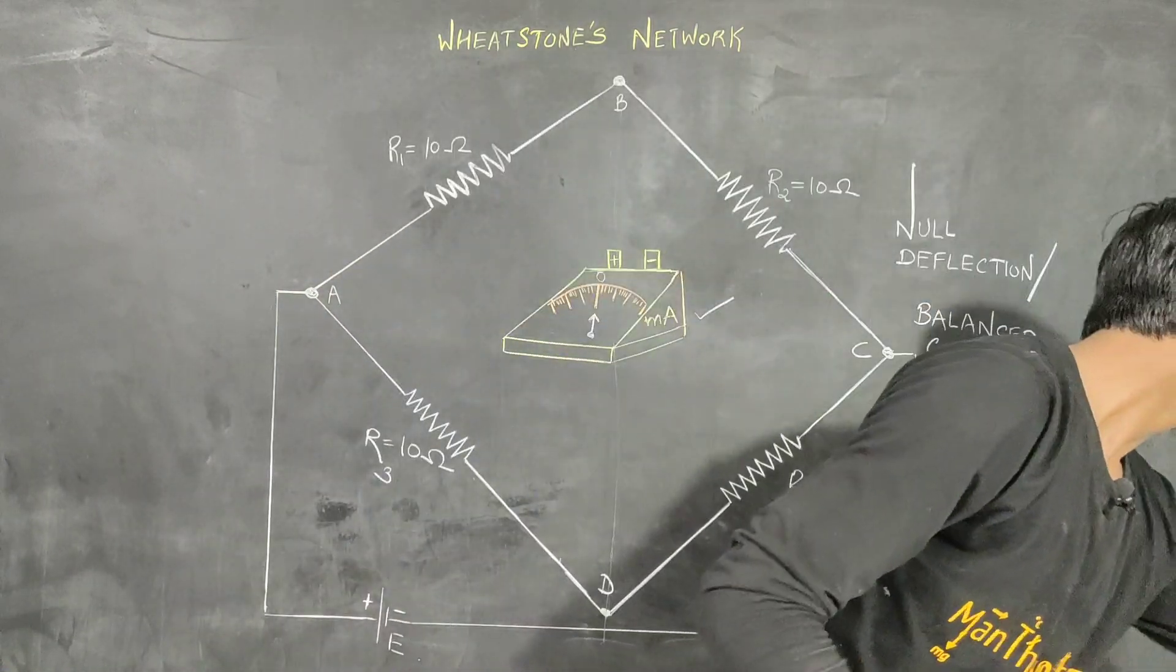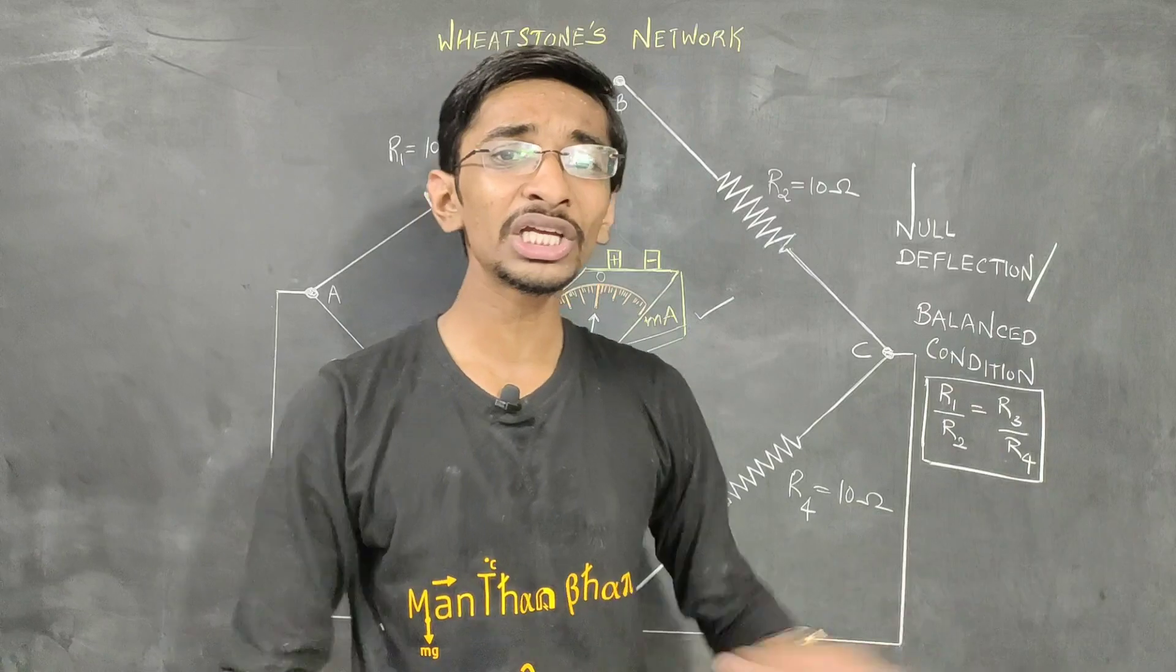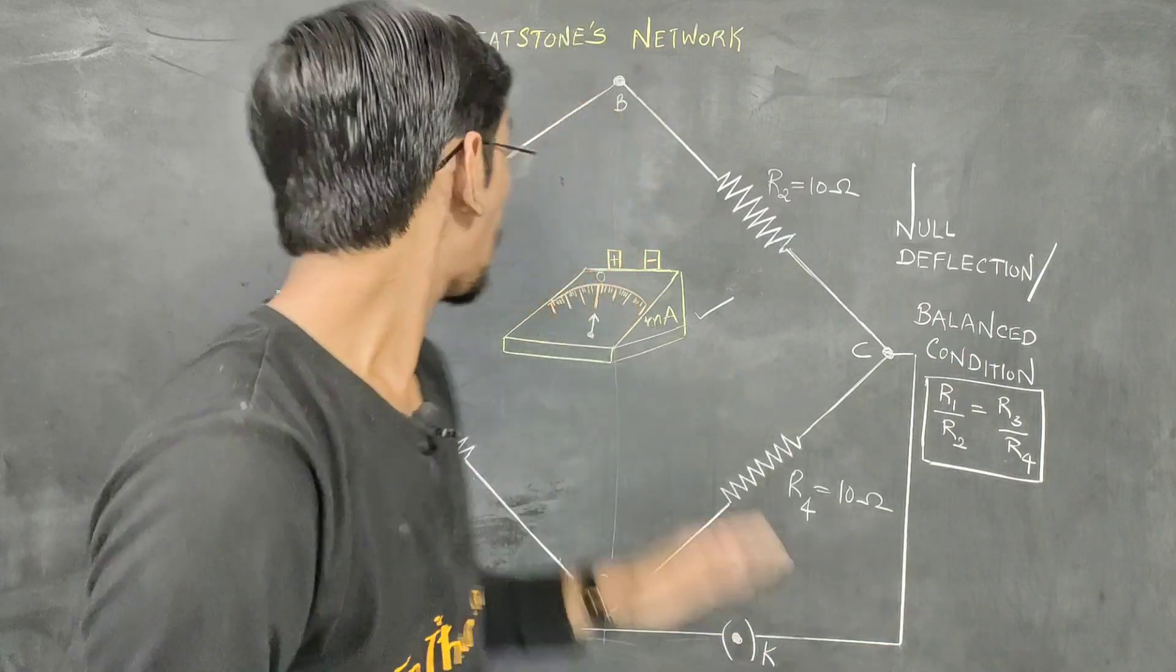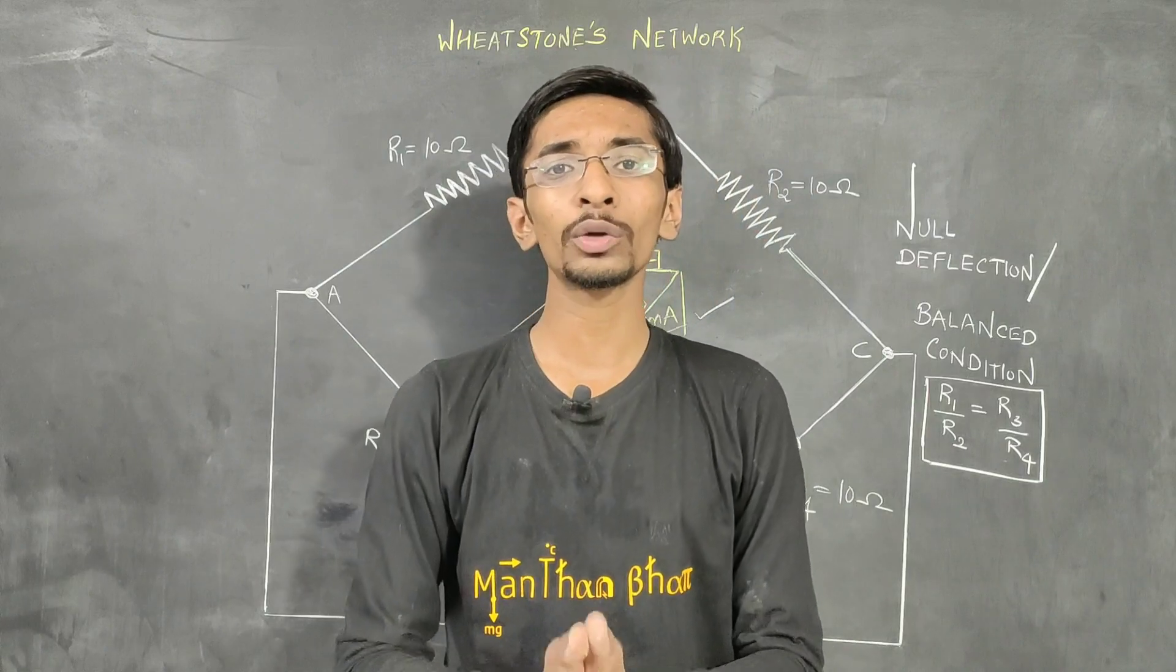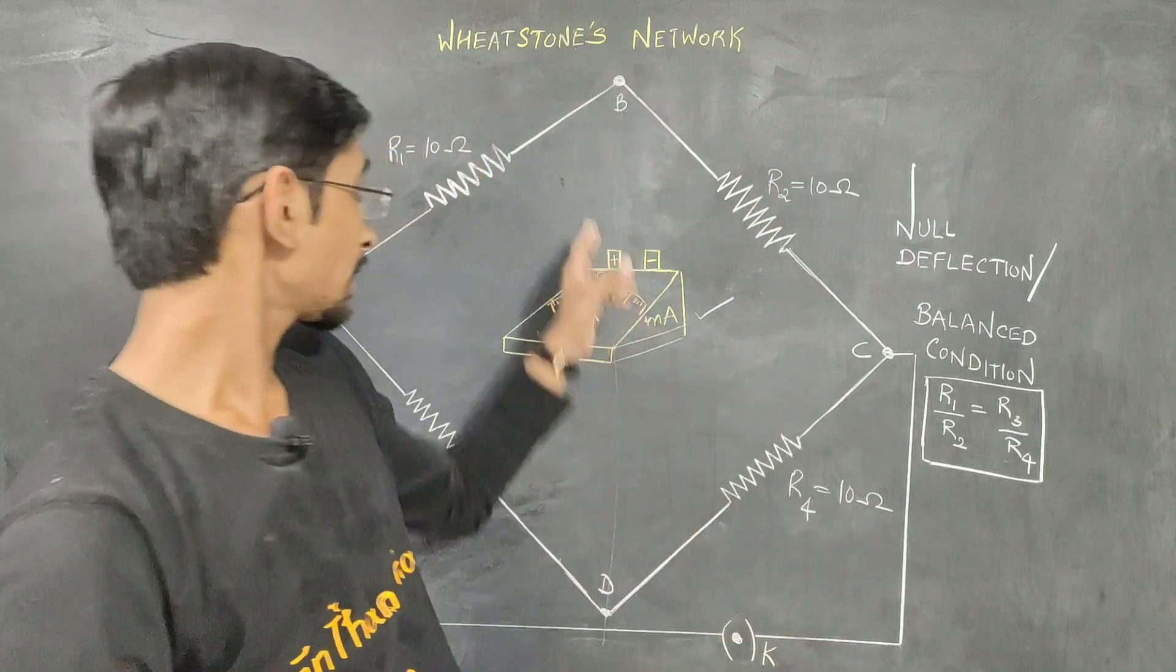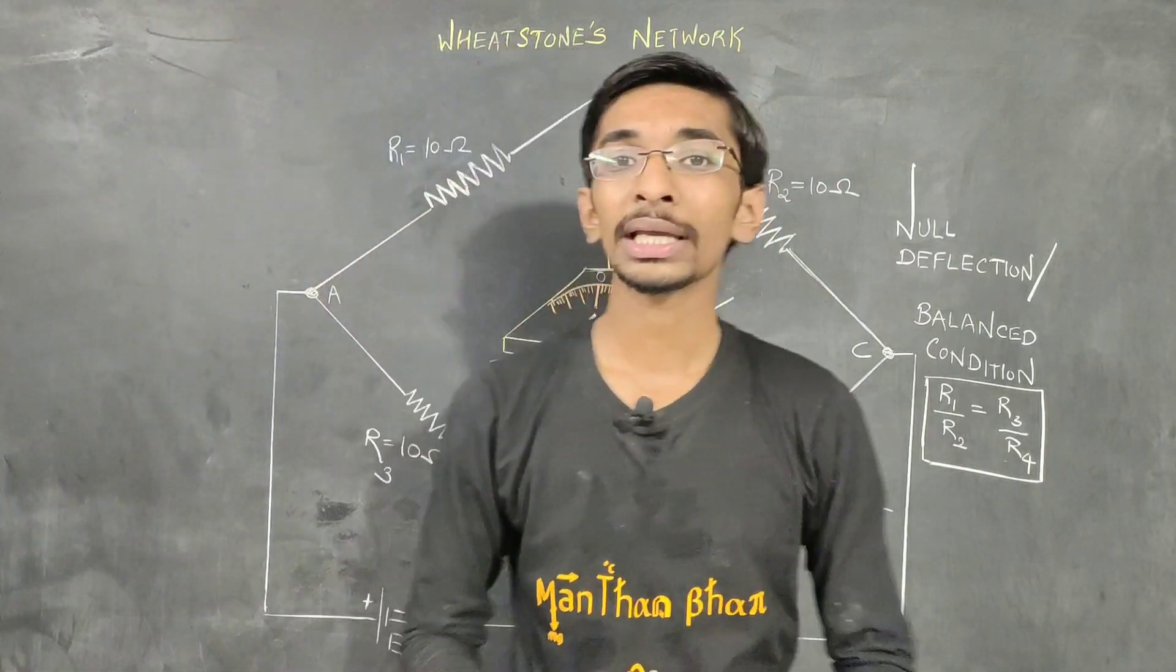R2 is equals to R3 by R4 is a balanced condition for Whitestone bridge. And if all the resistors are of same value, then there will always be a balanced condition and null deflection through the galvanometer.